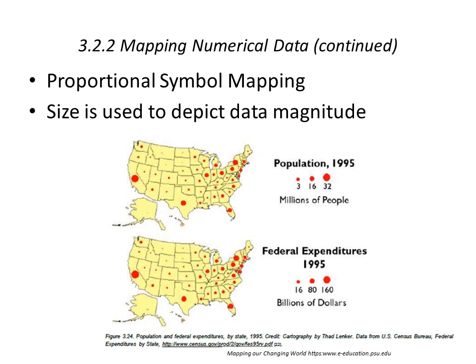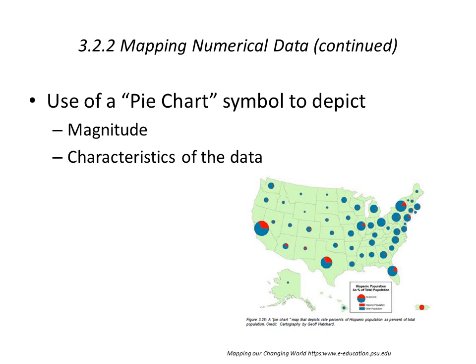Here are other examples of proportional symbol mapping — in this case from your textbook, examples of populations and federal expenditures at a certain point in time. Size is used to depict data magnitude of the proportional symbol. Another thing you can do is put two different data themes or variables on the map at the same time — for example, population by graduated symbol, but then dividing up that graduated symbol into various subcategories.